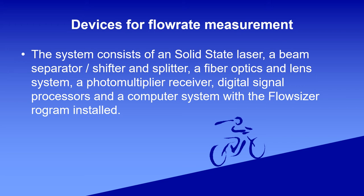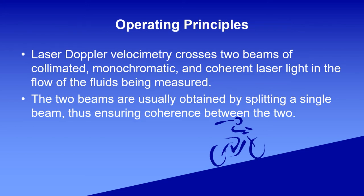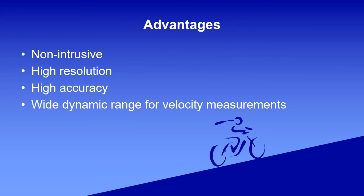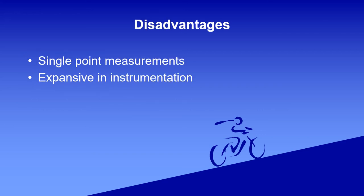The LDV system consists of a solid-state laser, a beam splitter and shifter, a fiber optics and lens system, a photomultiplier receiver, digital signal processors, and a computer system with the flow sizer program installed. The operating principle is that the laser Doppler velocimetry crosses two beams of collimated, monochromatic and coherent laser light — the two beams are usually obtained by splitting a single beam. The advantages are non-intrusive measurement, high resolution, high accuracy, and wide dynamic range for velocity measurement. The disadvantages are single point measurements and expensive instrumentation.